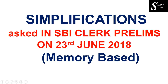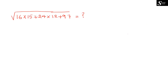When you come across the question, try to solve it yourself, then continue watching the video. So without wasting much time, let's go ahead. The first question is: root of (16 × 15 + 24 × 12 + 97) is equal to what? We have to simplify the values which are given within the root.